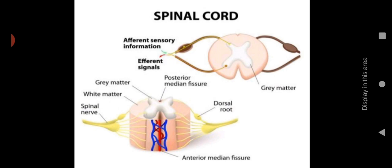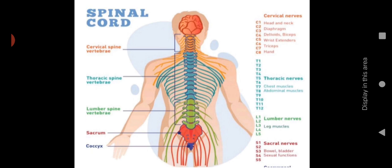In the spinal cord you can see afferent sensory information, gray matter, dorsal root, white matter, and spinal nerves. Through each spinal vertebra, a spinal nerve is attached. We have eight cervical nerves, 12 thoracic nerves, five lumbar nerves, and five sacral nerves, which help control our body functions.